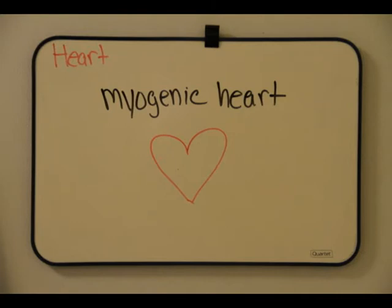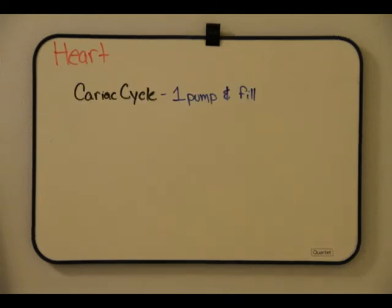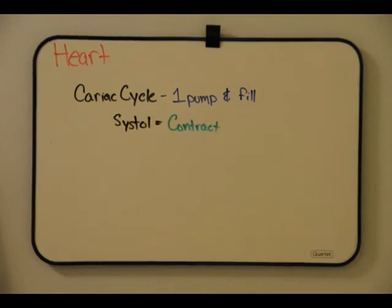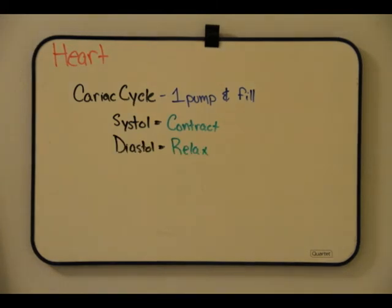The human heart is about the size of a clenched fist. Ventricles have thicker walls, especially the left one. The cardiac cycle refers to one complete sequence of the pumping and filling of the heart. Systole refers to the contraction phase and diastole refers to the relaxation phase.